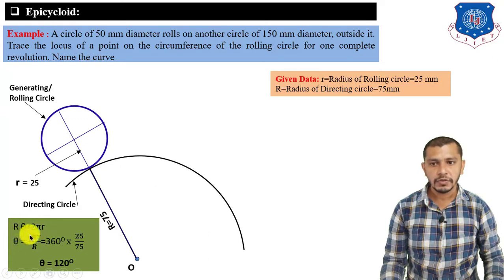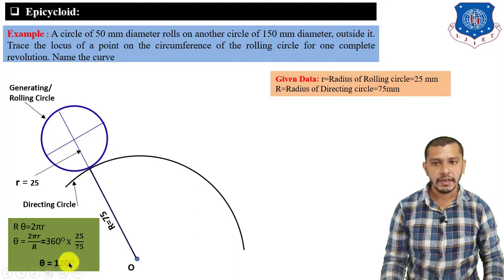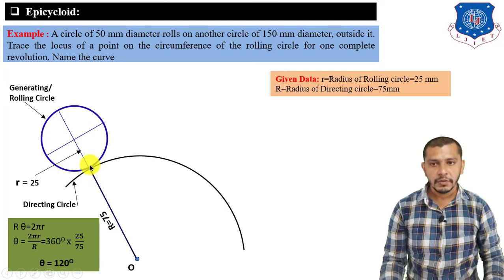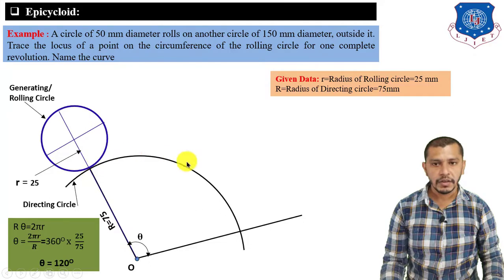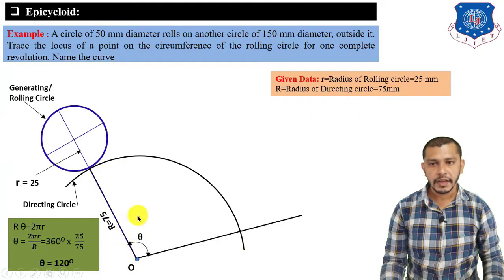Substituting: θ = 360° × 25 / 75, which gives θ = 120°. Taking the baseline, draw an angle of 120°. When the rolling circle completes one revolution starting from here, it reaches this end position. Now divide the rolling circle into eight equal parts.